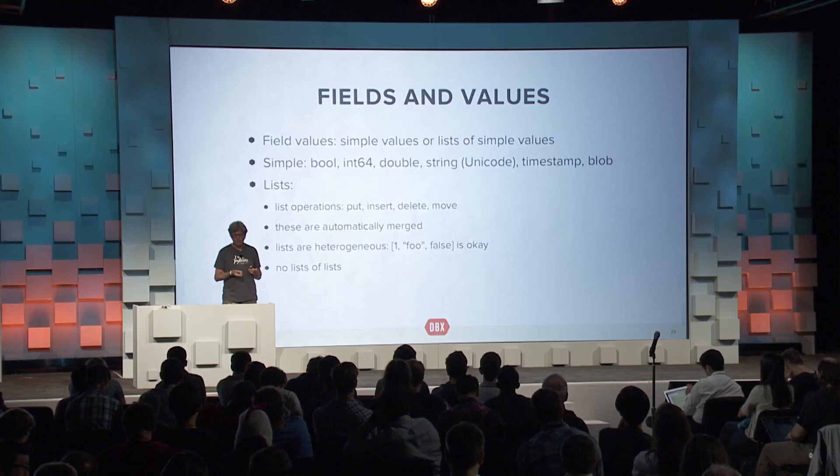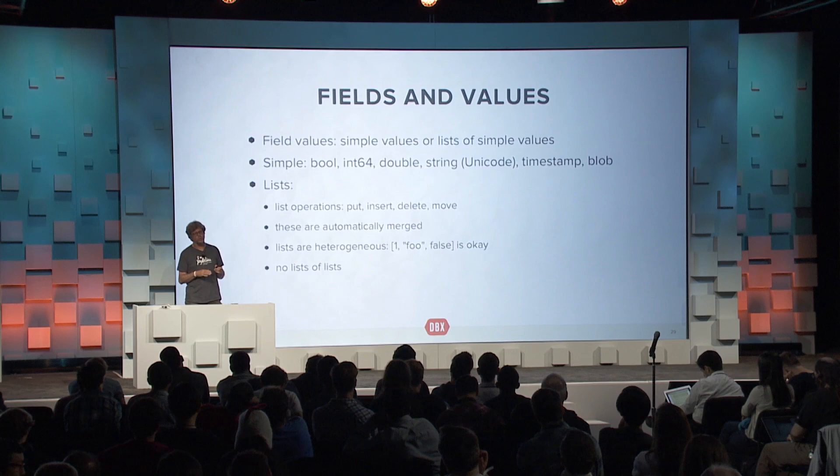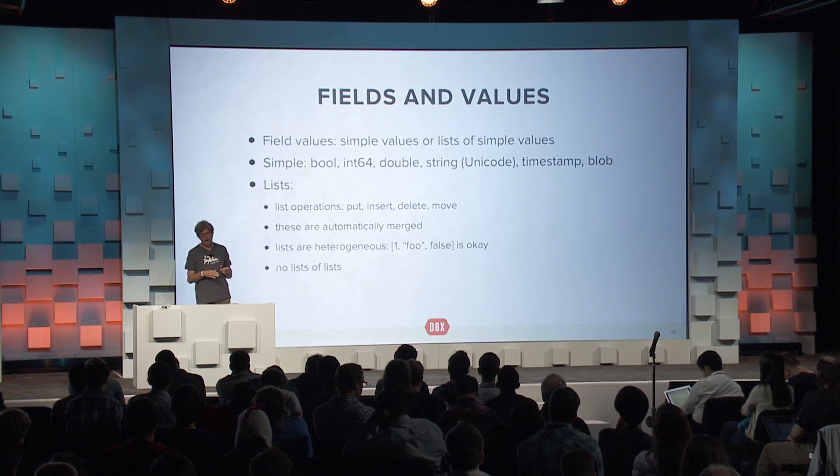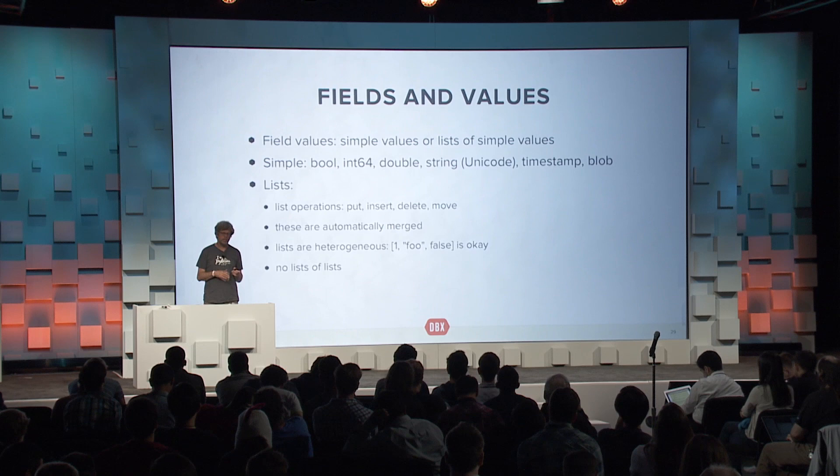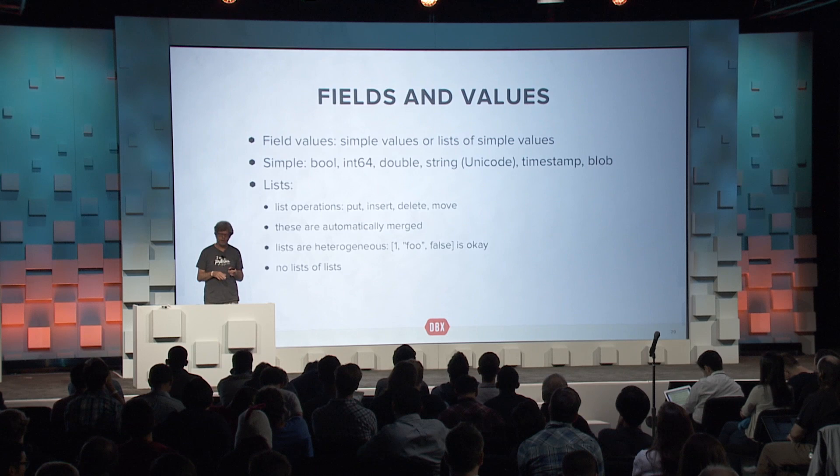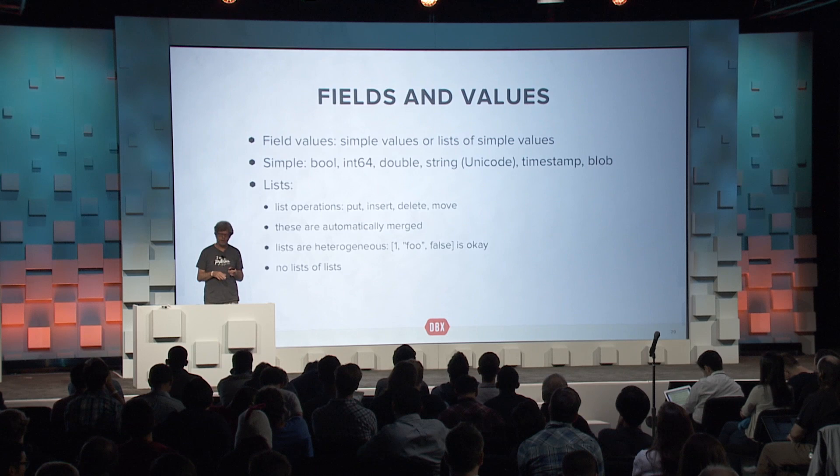Let's look at what you store in your Datastore. A field value can be a simple value like an integer, a floating point number, a timestamp, a unicode string, or a binary string. You can also have a list of values where those values are simple values. We do not support lists of lists. The list operations are the one area where we do a little operational transformation. We support four native list operations: replacing a value, inserting a new value, deleting a value, and moving values around. If different sequences of inserts, deletes, moves, and puts are done on two different devices, the rules of operational transformation will tell us exactly how the resulting list will look.